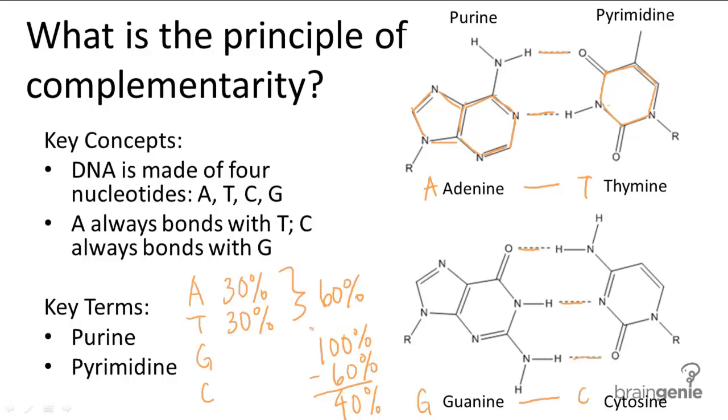You have 40% left to distribute evenly between guanine and cytosine, so you can take 40% divide by two and you get 20% for each of guanine and cytosine bases.